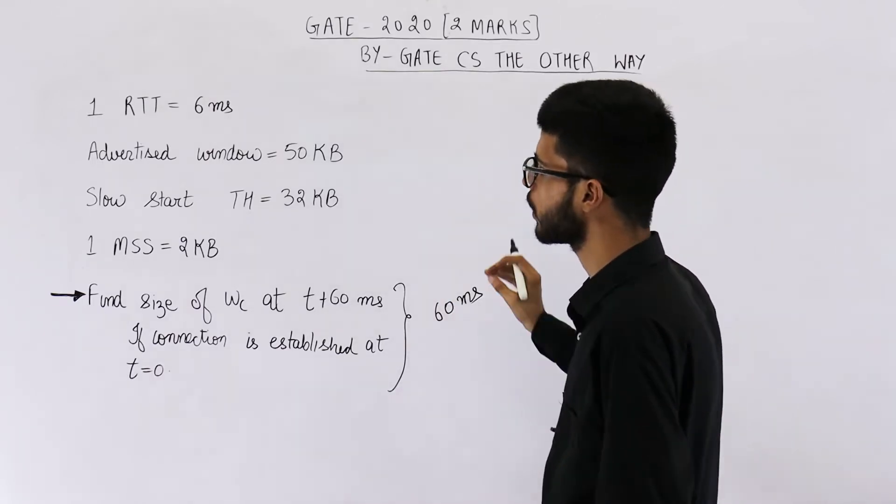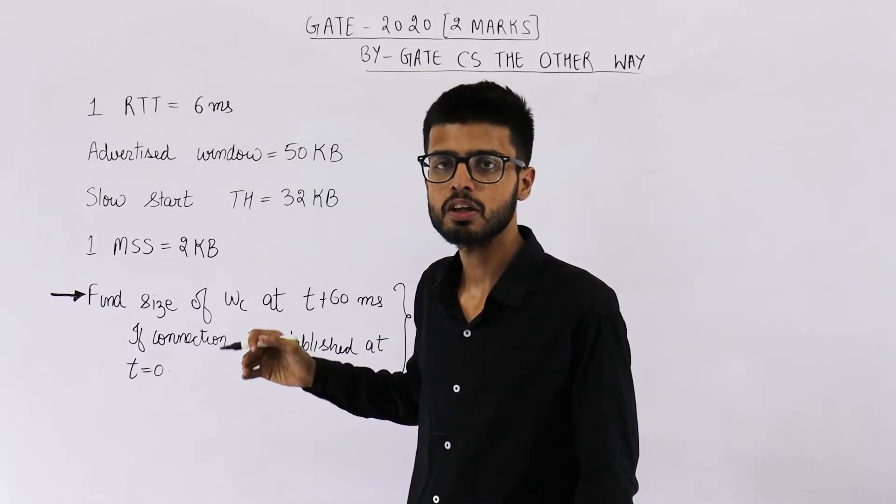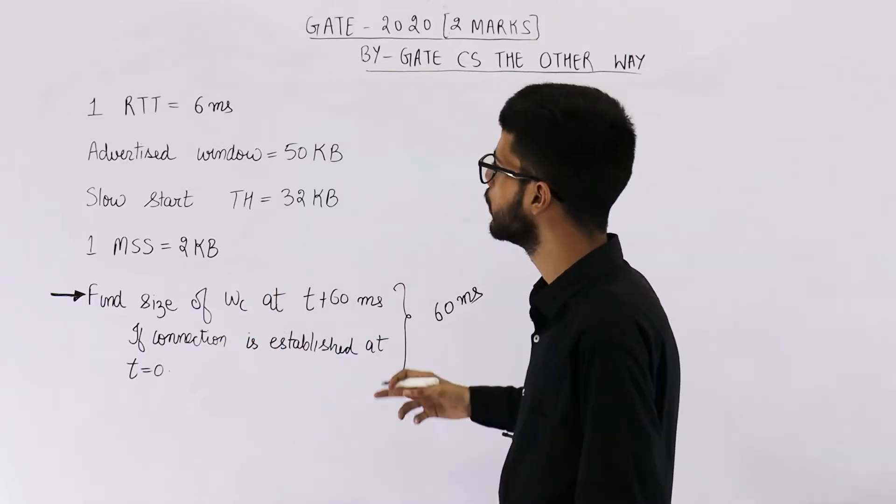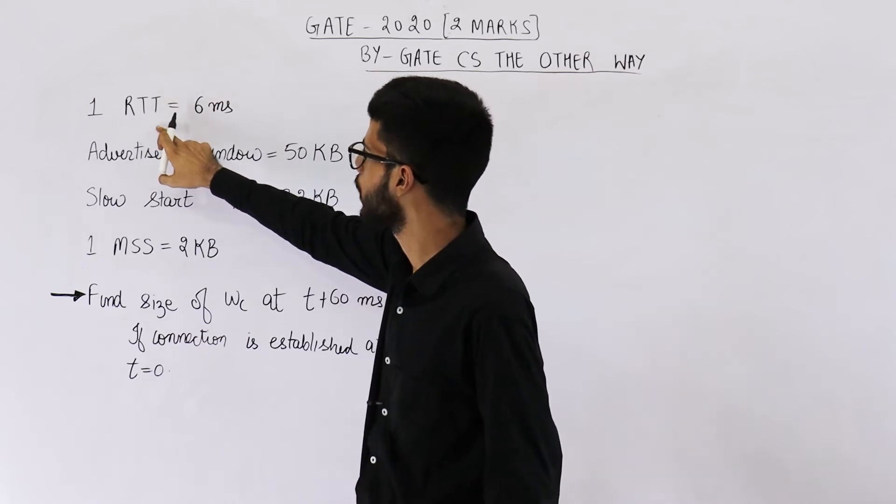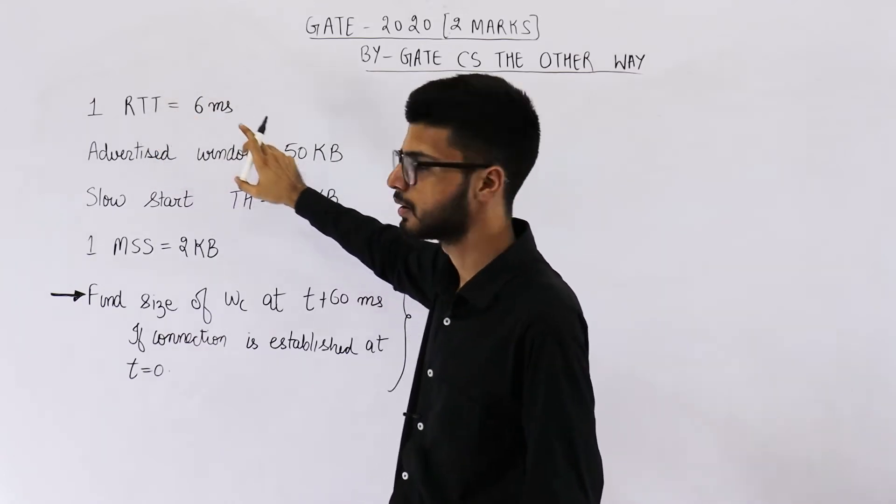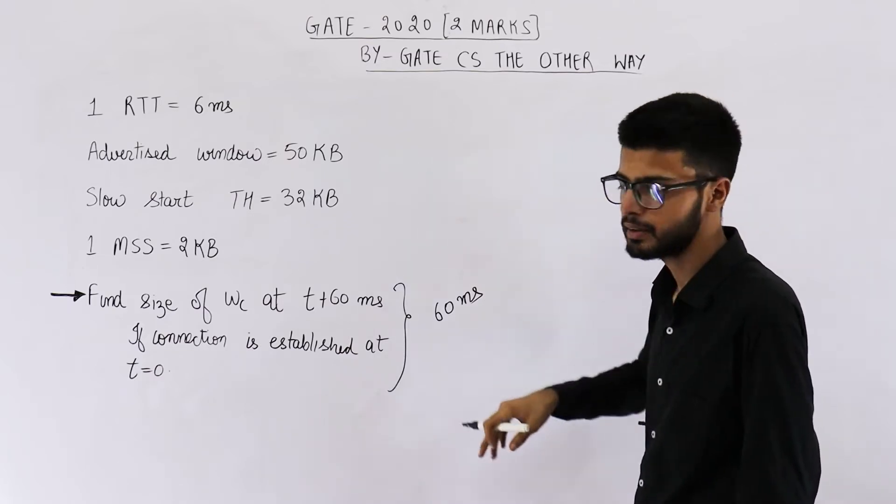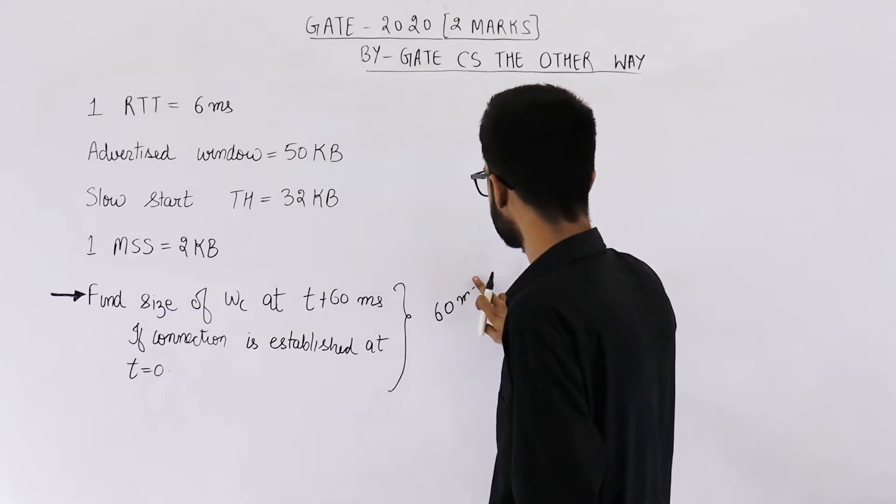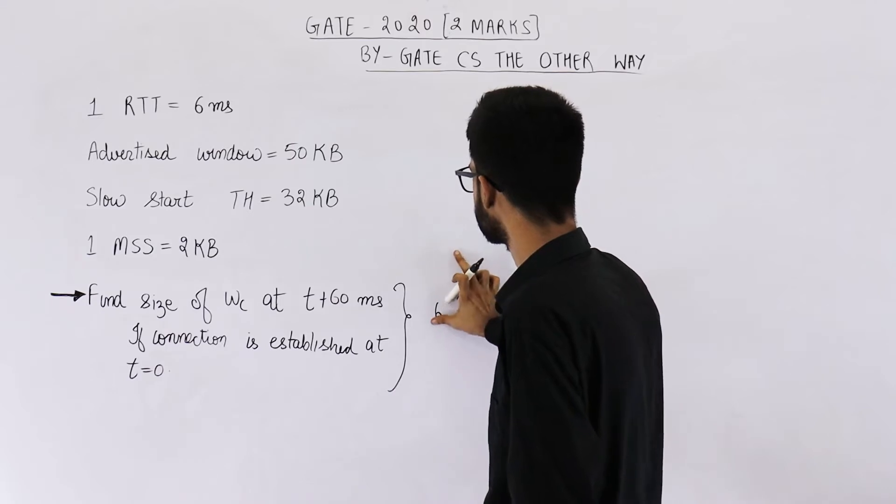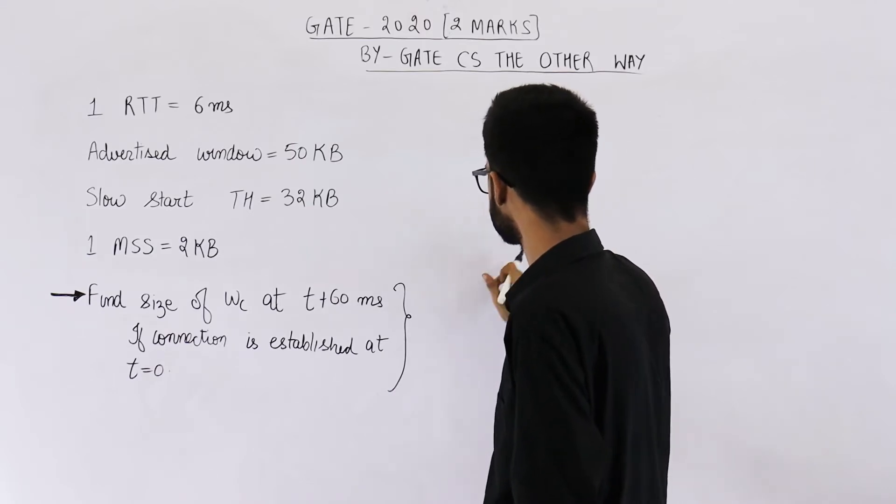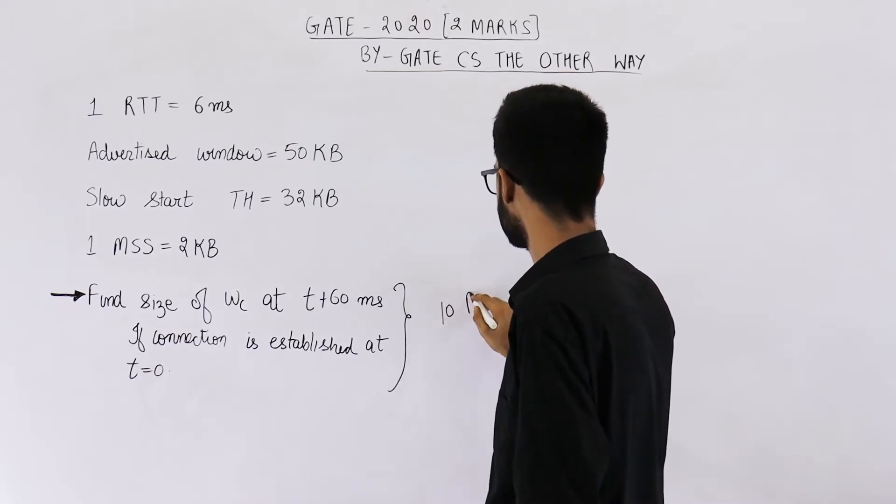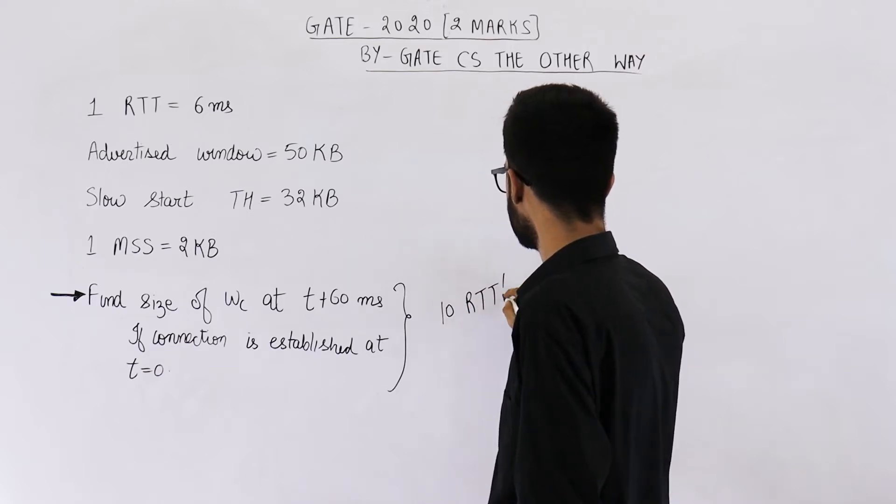Now whenever you want to solve such a question, convert all the times in RTT. So one RTT or one round trip time is 6 milliseconds. How many RTTs will be 60 milliseconds? It will be 10 RTTs. So this time can be simply written as 10 RTTs.